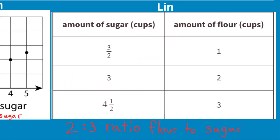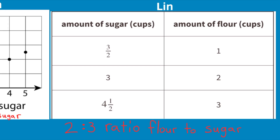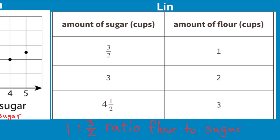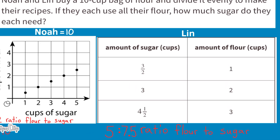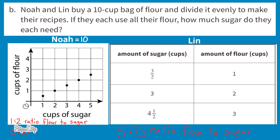For Lynn, using the ratio of 1 cup of flour to 1.5 cups of sugar: 1 cup × 5 = 5 cups of flour, and 1.5 cups of sugar × 5 = 7.5 cups of sugar. So 15/2 = 7.5, or seven and a half cups of sugar for every 5 cups of flour. Noah uses 10 cups of sugar and Lynn uses 7.5 cups of sugar.